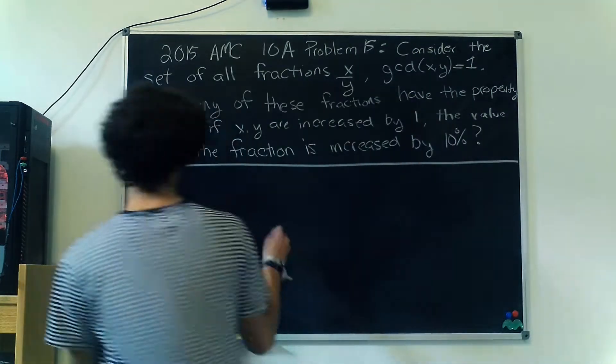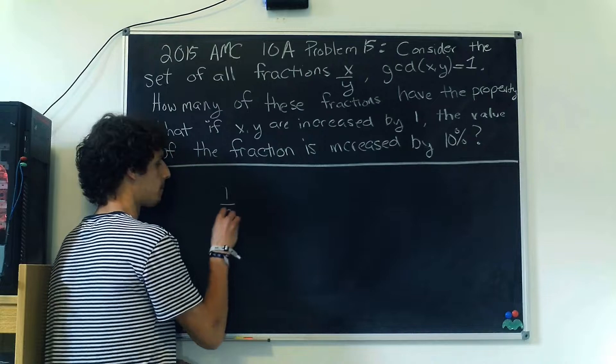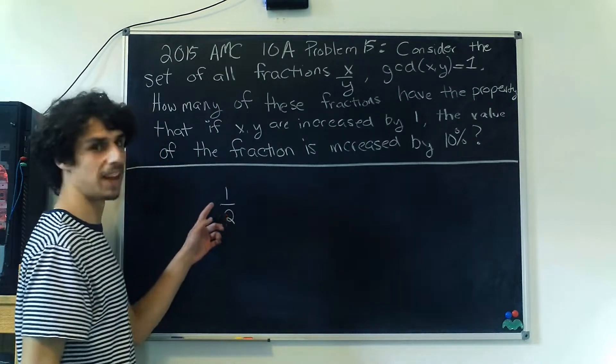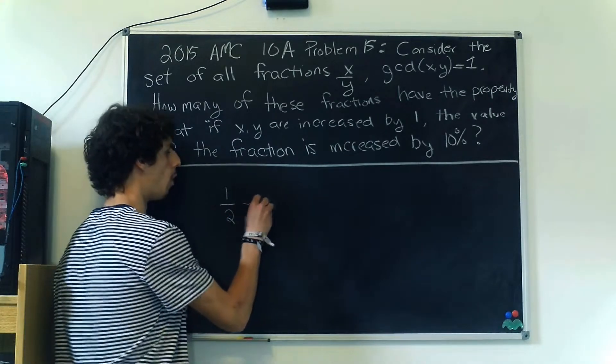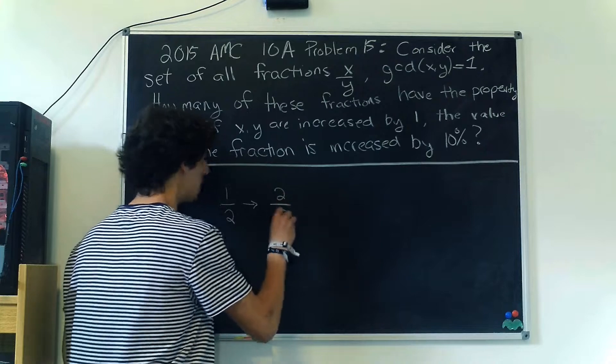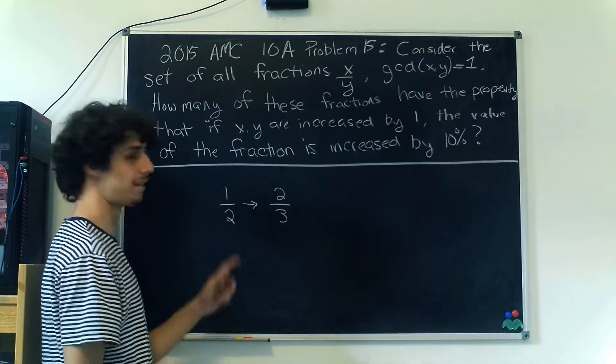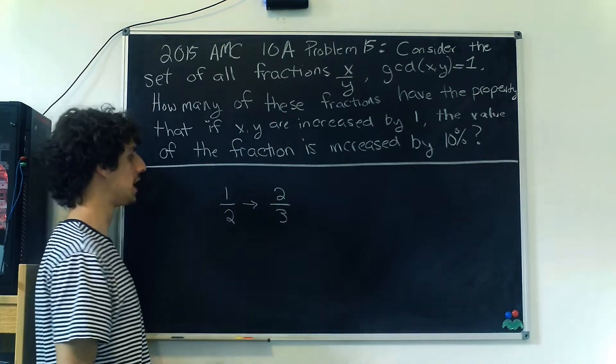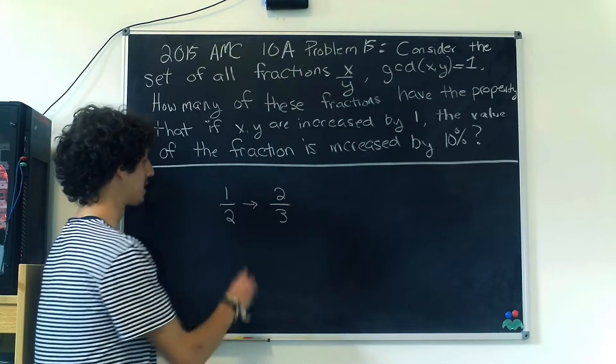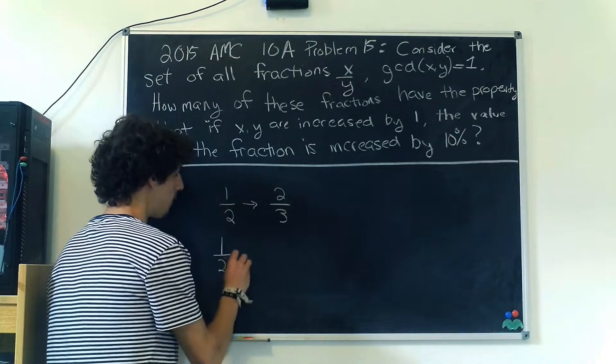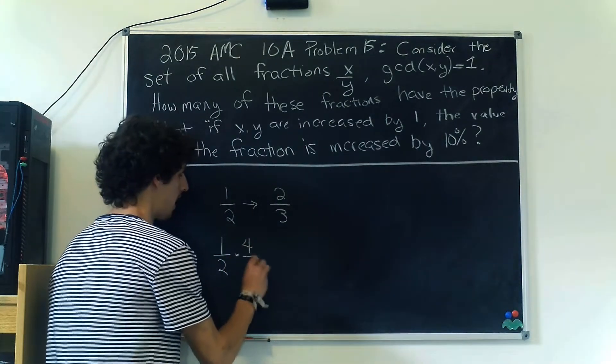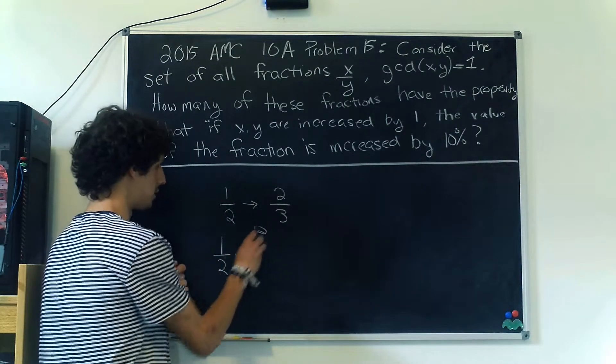First let's look at the fraction 1/2, and if we increase this by 1 in the top and the bottom, we get 2/3. We can get the percentage increase by figuring out what we multiplied 1/2 by to get 2/3. That's going to be 4/3 because if you multiply 1/2 by 4/3, this cancels down to 2, and you get 2/3.